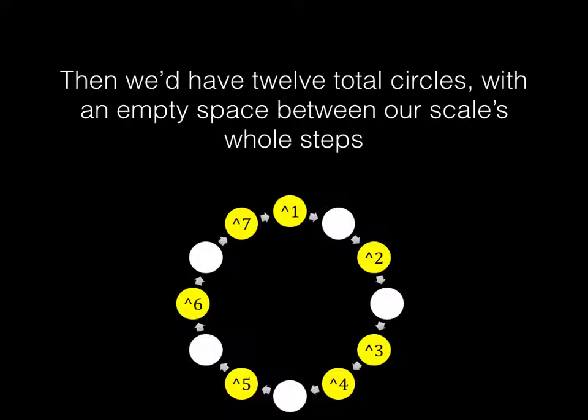So scale degree 1 to scale degree 2, we've got an empty space in between it. But because between scale degree 3 and scale degree 4 is a half step, there's no space in between it. And we'll have 12 total circles.